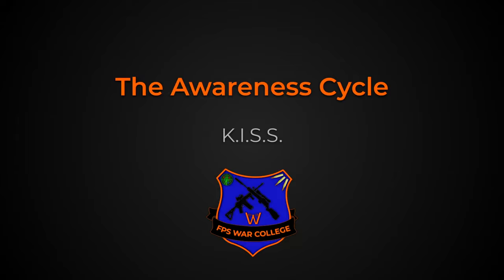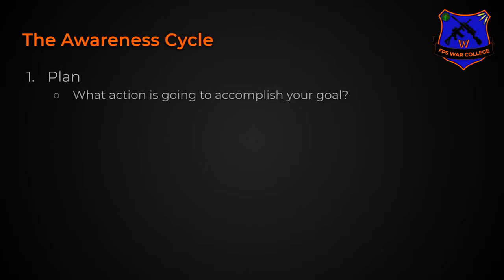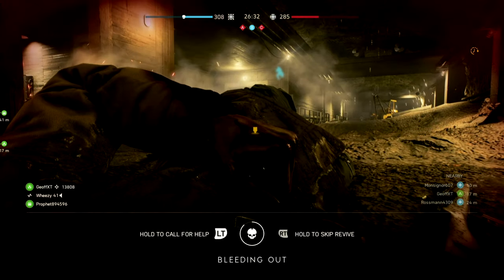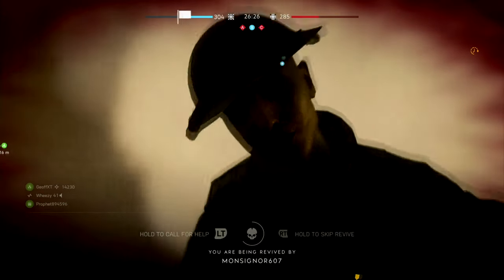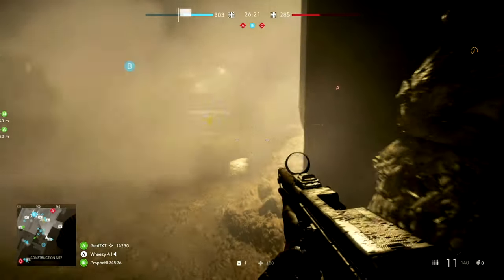For FPS games, we're going to use a simpler approach I've called the awareness cycle — Keep It Simple Stupid. The awareness cycle breaks down into three phases: the plan phase, which involves what action will accomplish our goal; the execute phase, which is to take that action; and the evaluate phase — did it work, and what now? By bringing awareness to this process, it allows you to break down what you're doing into something that can be improved and optimized.